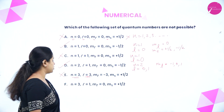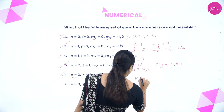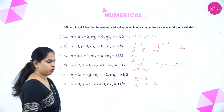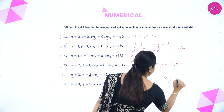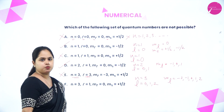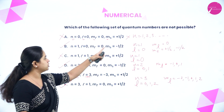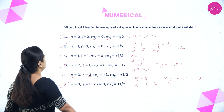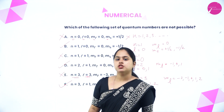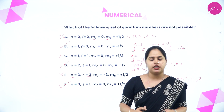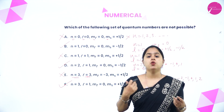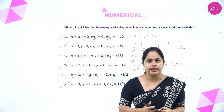(F) n=3, l=1, ML=0, MS=+½ — possible, as l=1 is valid for n=3, ML=0 is within −1 to +1, and MS=+½ is valid. So the sets that are not possible are A, C, and E. I hope quantum numbers and the concept of shells, subshells, and orbitals are now clear.